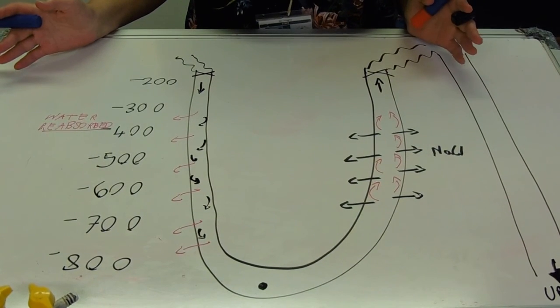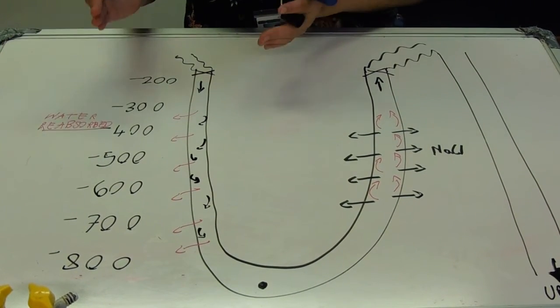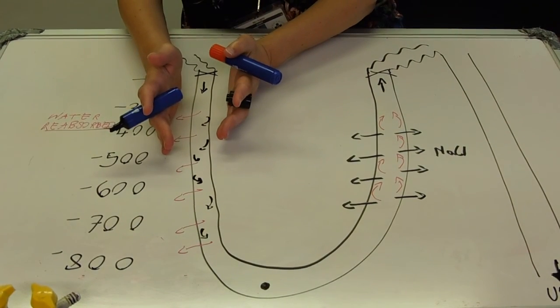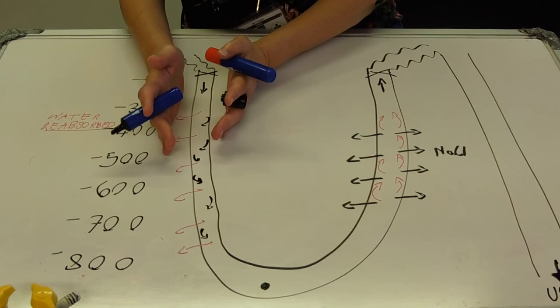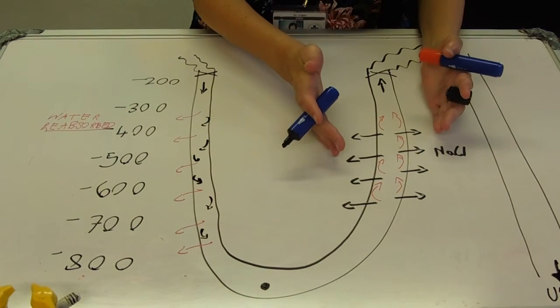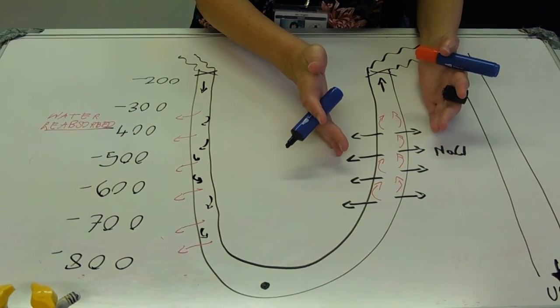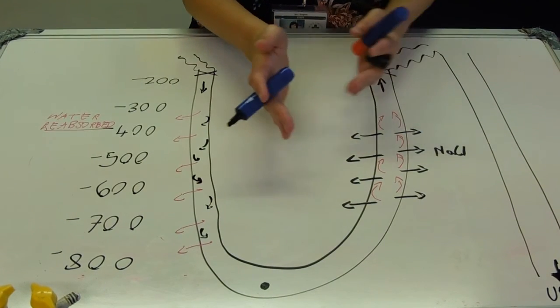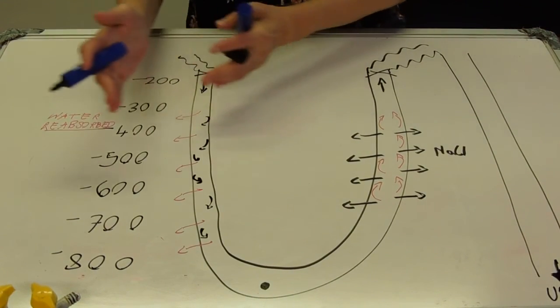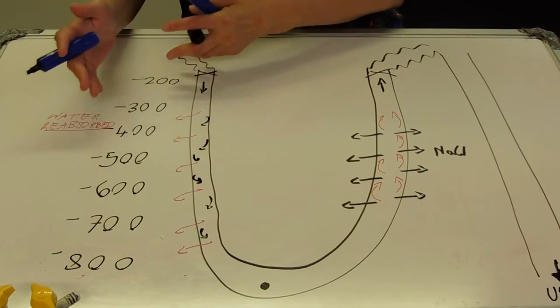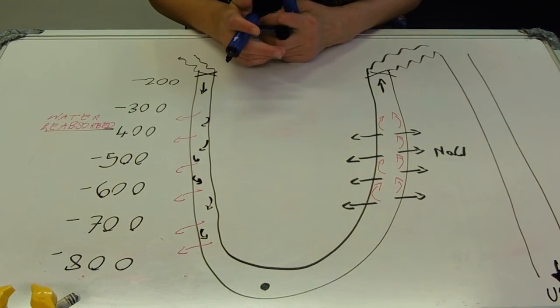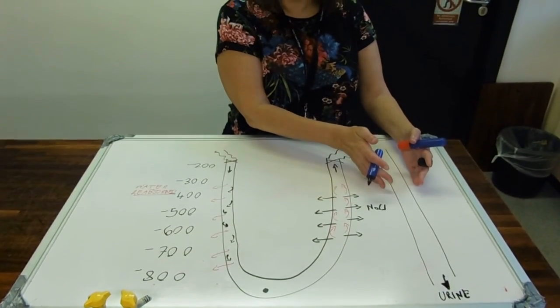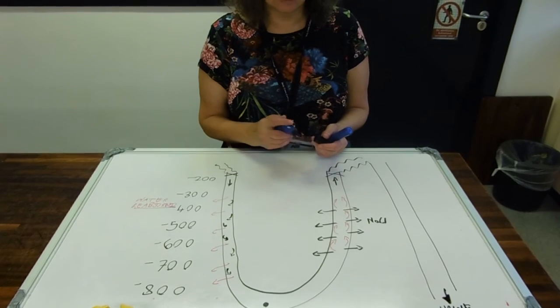So what do we need to say when we're talking about it? You need to remember the permeabilities. Descending, permeable to water, water leaves by osmosis. Ascending, impermeable to water, salt's actively transported out into the medulla, lowering the water potential of the medulla and making that salt concentration gradient. In order, from the collecting duct, more water can be reabsorbed if necessary. That is really all there is to the Loop of Henle.